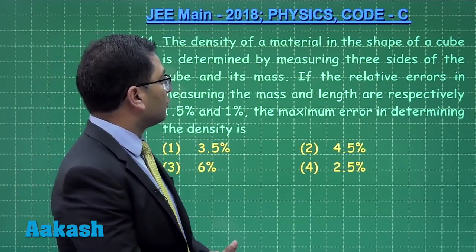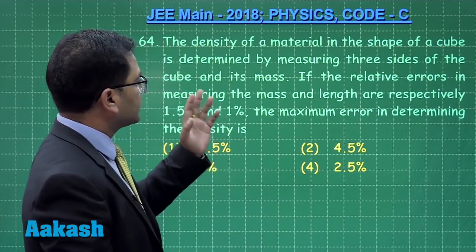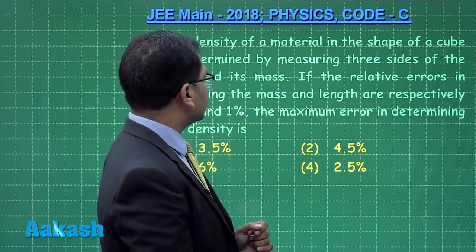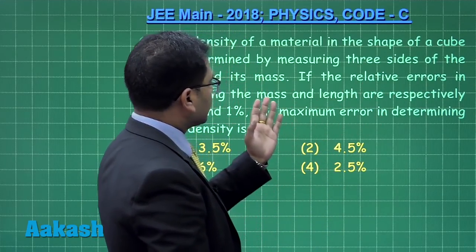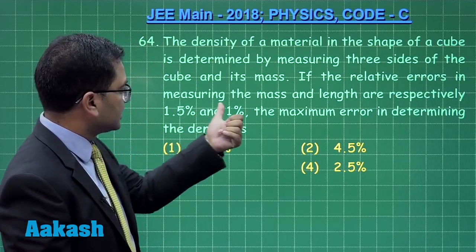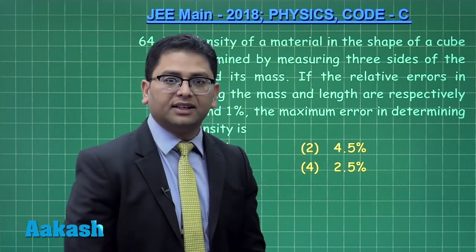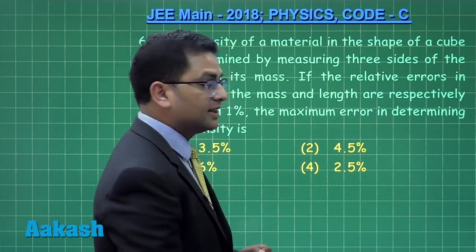The question is very straightforward. The density of a material in the shape of a cube is determined by measuring three sides of the cube and its mass. The relative errors in the measurement of mass and length are given as 1.5% and 1% respectively, and we need to calculate the maximum error in determining the density.